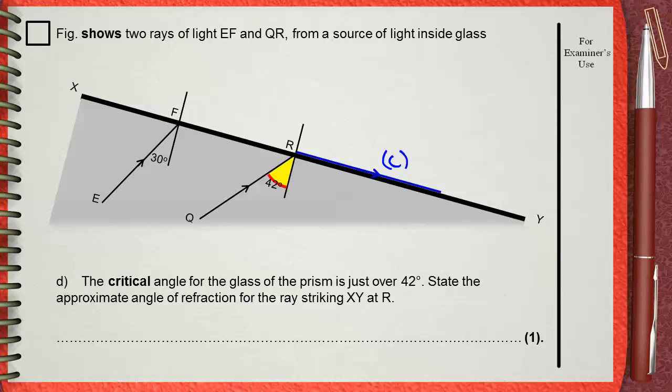Now, it's clear that the angle of refraction, which is defined as the angle between the normal and the refracted ray, in this case it will be 90 degrees. So, our answer is 90 degrees.